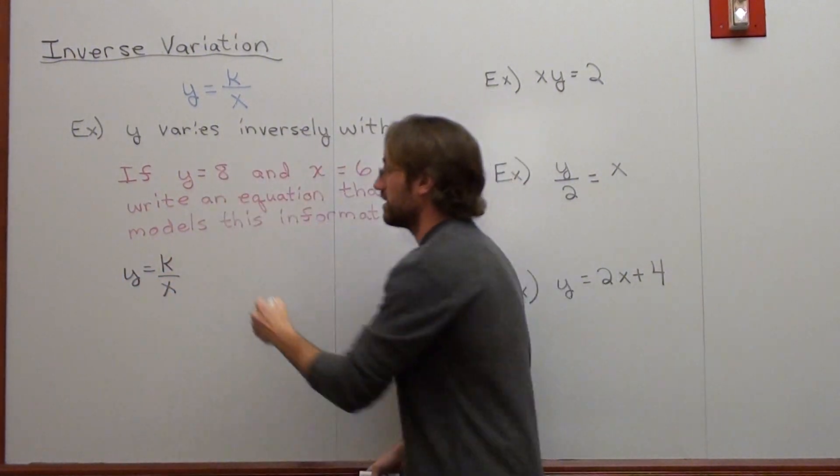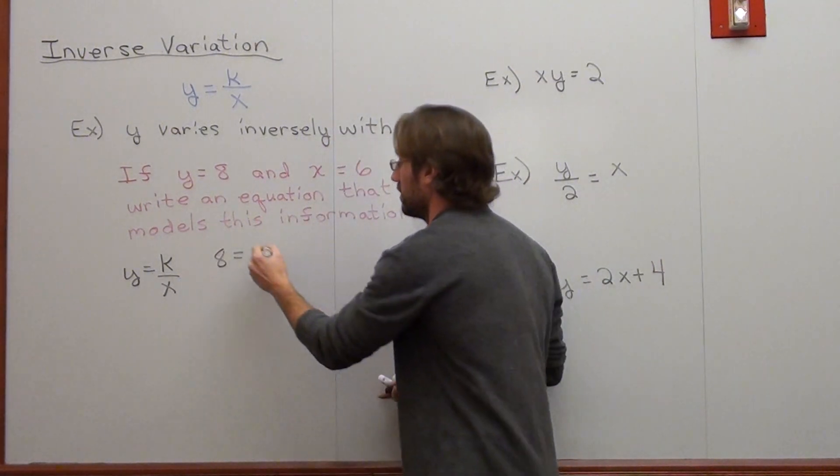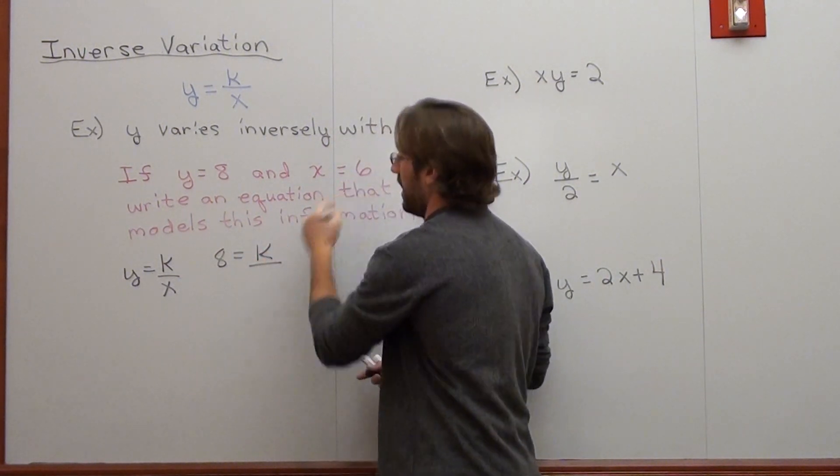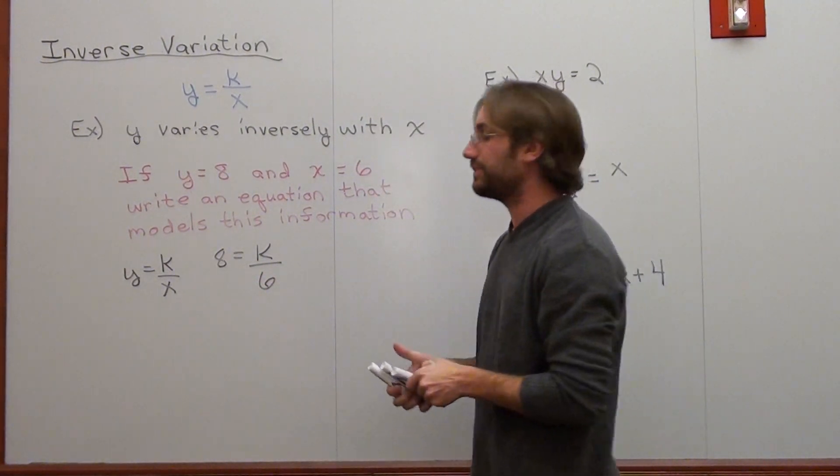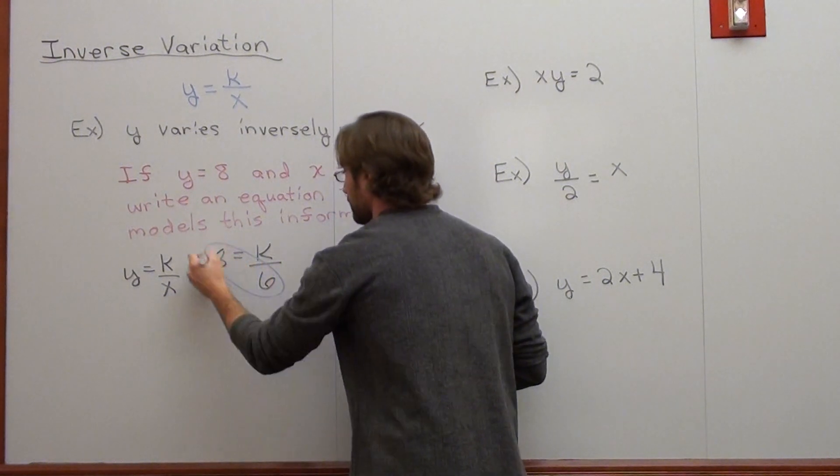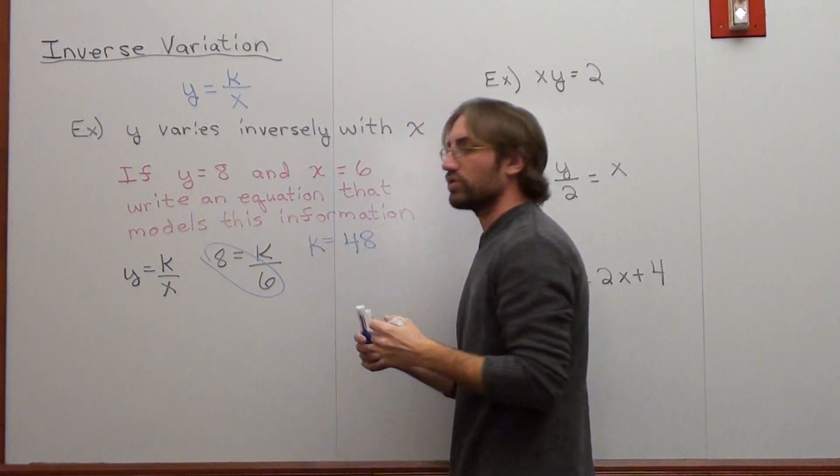Now y is 8. I don't know my constant of variation. And my x is 6. If I want to solve for k, just cross multiply. That's what I'm going to do. k equals 48.